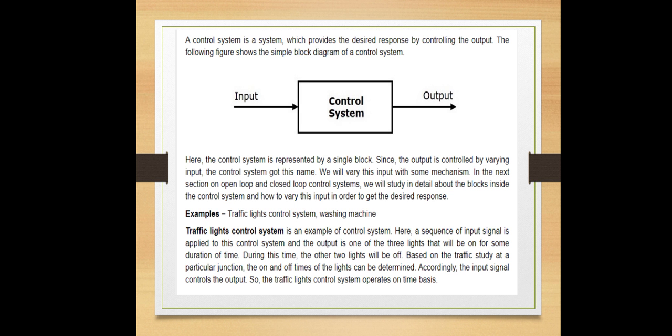So input signal to this control system is the sequence, and output is one of the three lights. At traffic light signals we have three colors: red, green and yellow. Either one of the light should be on at the output side for some duration of time. During this time the other two lights will be off. Based on the traffic study at a particular junction, the on and off times of the lights can be determined accordingly.